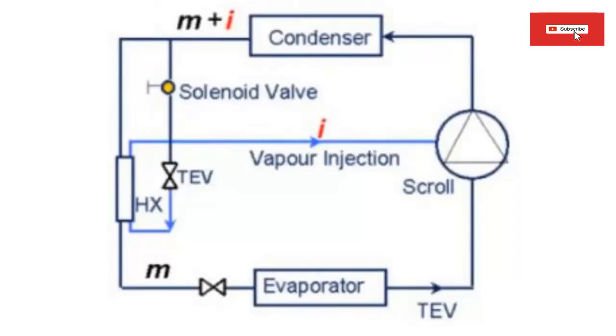30. A solenoid valve should be installed in the liquid line, which feeds the economizer, in order to prevent migration of the refrigerant liquid to the compressor when the compressor stops.